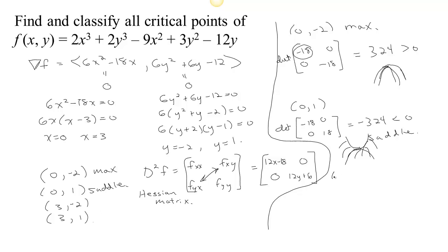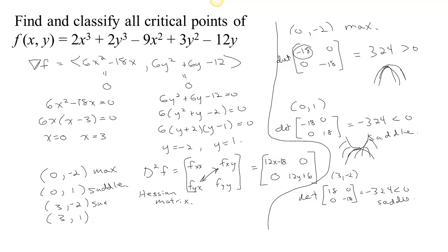Case 3: at (3, negative 2), the Hessian matrix has 36 minus 18 equals positive 18 in the (1,1) position, 0, 0, and negative 24 plus 6 equals negative 18 in the (2,2) position. The determinant is negative again, so we have another saddle at (3, negative 2).